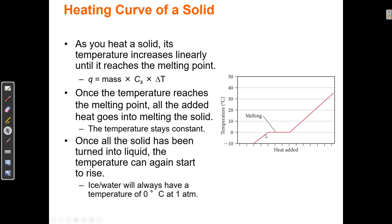Down here is ice — solid water. As I add heat to solid water, the temperature increases. I have ice at negative 10 degrees, I heat it up, and now I have ice at zero degrees. Ice cannot get any hotter than zero degrees, because at zero degrees the hydrogen bonds start breaking and the ice turns into liquid water. This flat part of the curve is where I'm adding energy to the sample, but the temperature is not increasing.